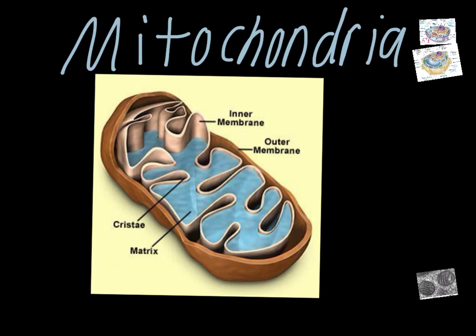There are two parts of the mitochondria. There's the cristae, which is the inner membrane — you can see it's being pointed to here. And then the matrix is the fluid-filled inner portion of the mitochondria. When we get to the chapter on respiration, you'll find that process is actually broken down into two different steps. One part of that process is actually happening in the inner membrane, and the other portion is happening in the matrix of the mitochondria.